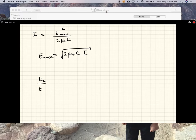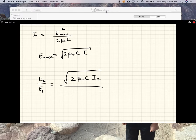So what are we trying to find? The amplitude of the electric field at 0.2 divided by amplitude of electric field at 0.1, which is square root of 2 mu naught c intensity at 2 divided by 2 mu naught c intensity at 0.1. Intensity at 2 divided by intensity at 1.